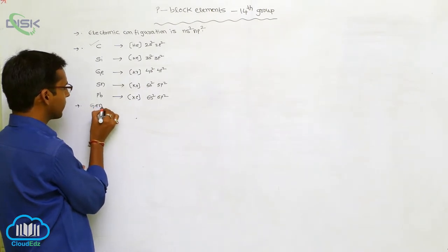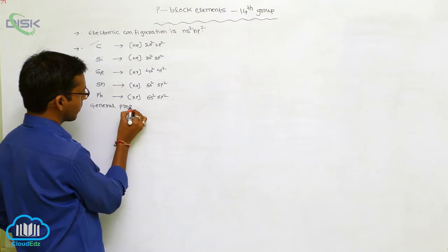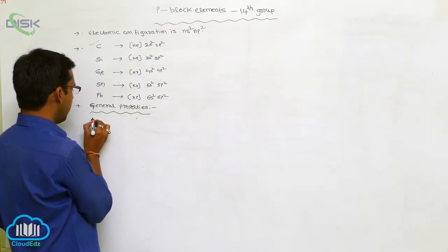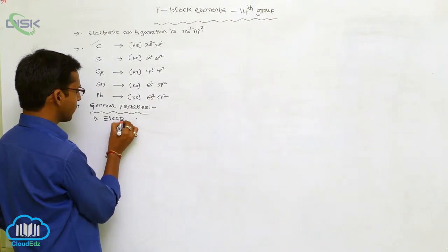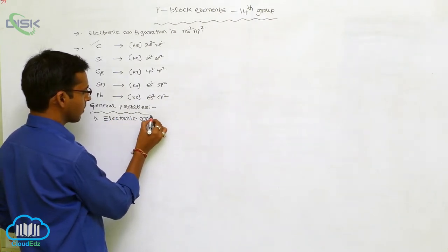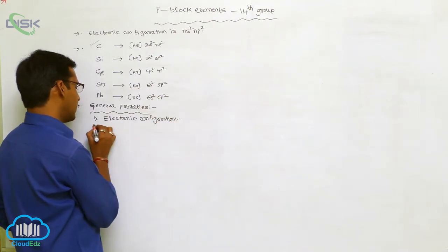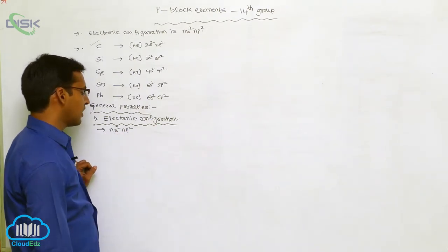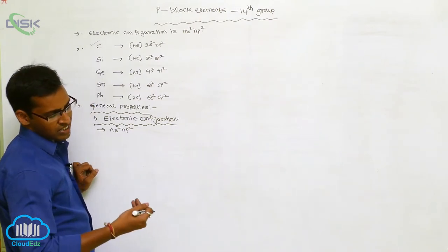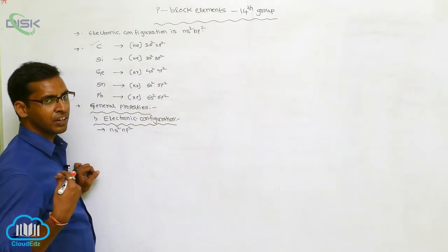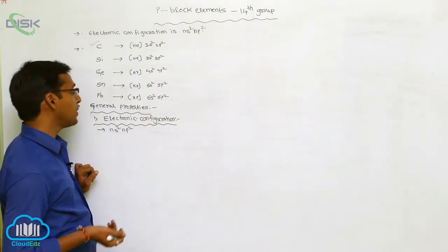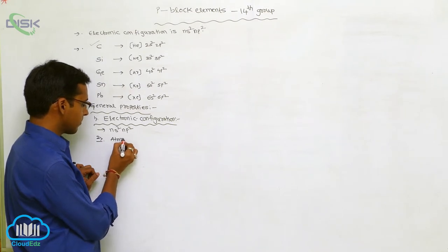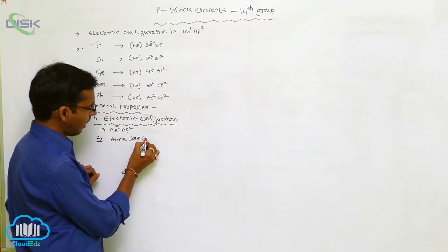General properties of 14th group elements. The electronic configuration is NS2 NP2, with the outermost shell containing only 4 electrons. With increasing atomic number, electrons enter into different shells or periods.